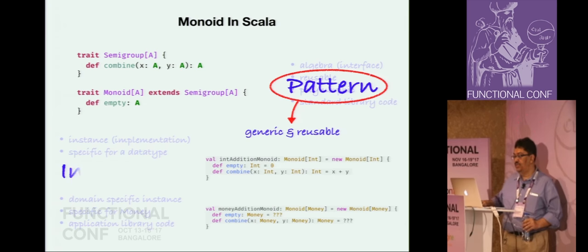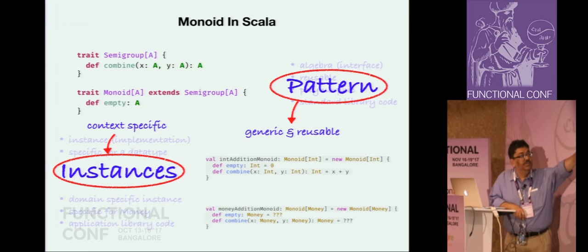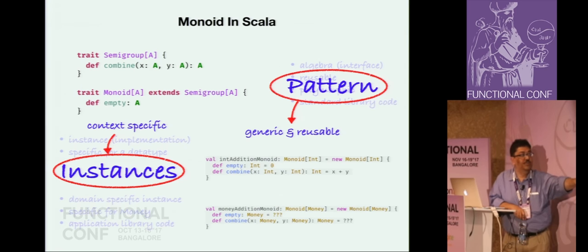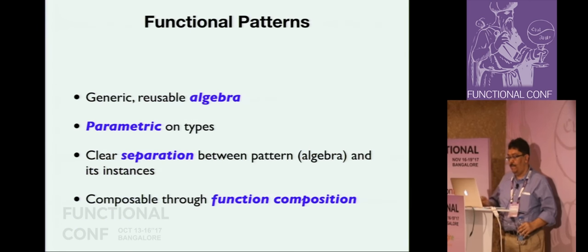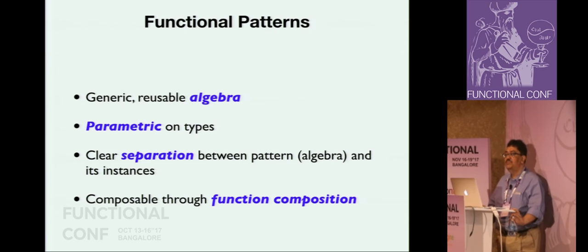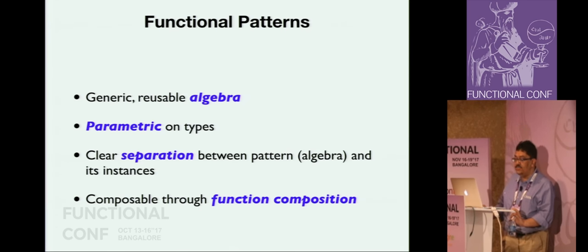So this is the summary. We have the pattern - the top part gives you the pattern which is the reusable, generic part, and the bottom part gives you the context-specific implementation. As part of the solution, the top part is completely reusable across all contexts and all implementations of a monoid. Functional patterns are defined by means of a generic reusable algebra - it has to be parametric on types. There is a clear separation between the pattern and its instances. The pattern is the algebra part and the instances are the implementations, and these patterns are composable through function composition.